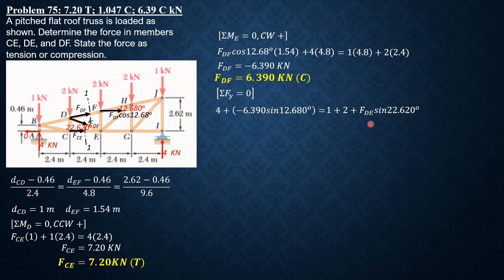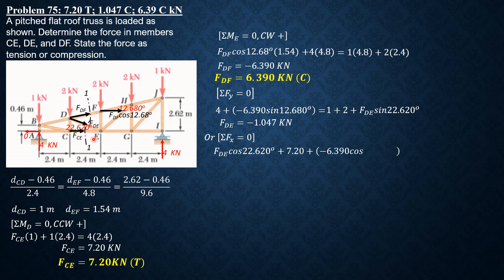Only FDE is unknown, so FDE = negative 1.047 kilonewtons. We verify using summation of forces X equals zero: FDE cosine 22.62 plus FCE (7.2) plus FDF cosine 12.68 (where FDF is negative 6.390) equals zero. This gives FDE = negative 1.046 kilonewtons — a very small discrepancy due to rounding.